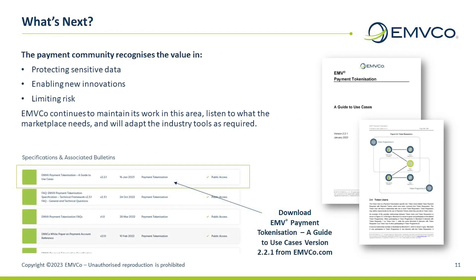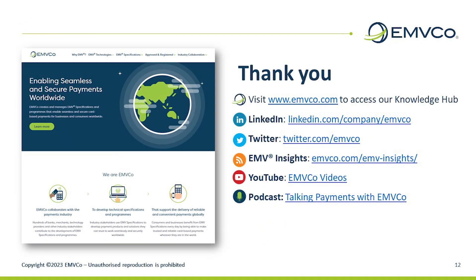The payment community recognizes the value in replacing a primary account number or PAN with a payment token to protect sensitive data and enable new innovations. The EMV payment tokenization specification technical framework is at a mature stage, and EMVCO continues to work with the industry to understand how to innovate and describe new use cases relevant to the payment industry. Further resources are available on the EMVCO website. Follow us on social media, subscribe to our insight series online, and subscribe to our podcast from your preferred podcast provider. Thank you, and we'll see you next time.